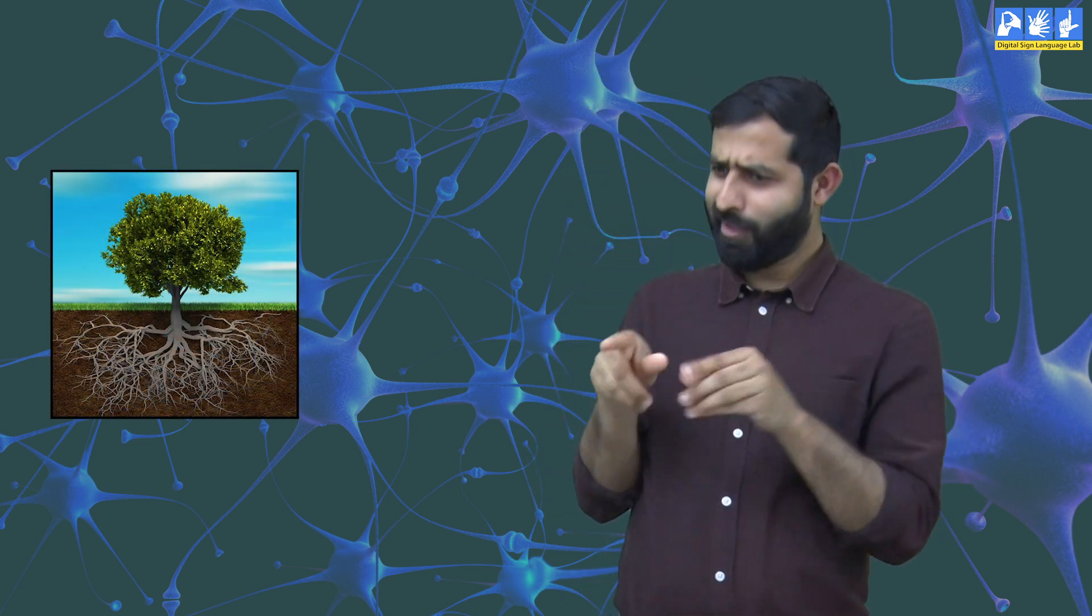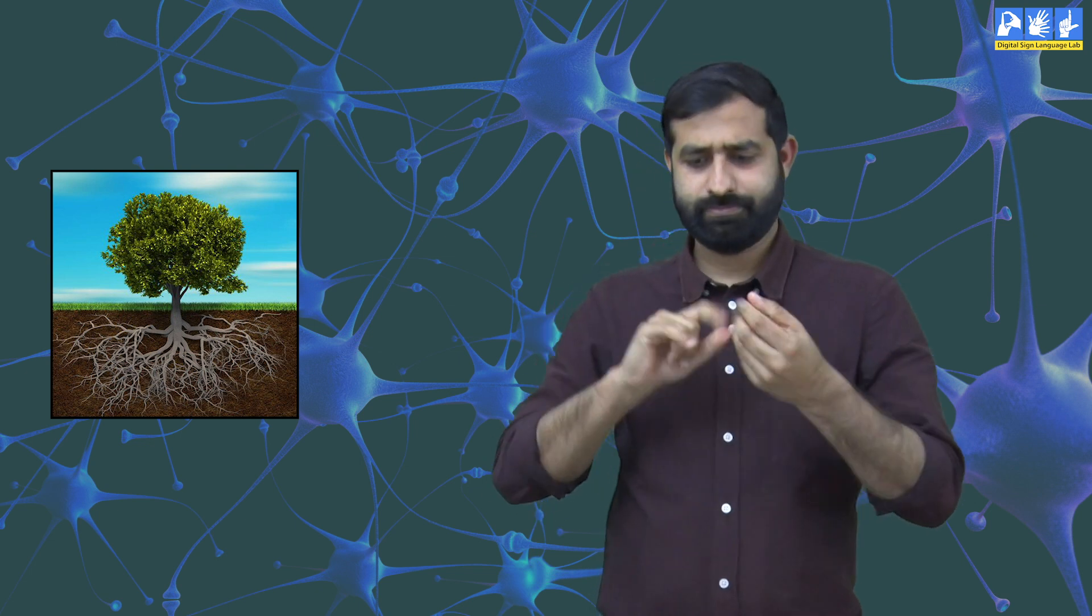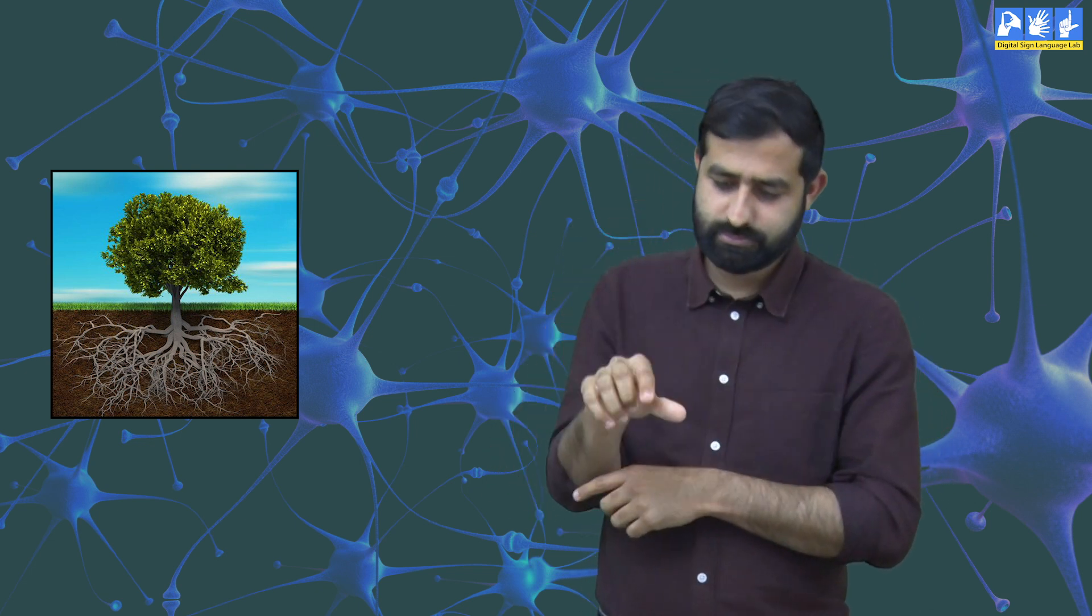When a plant grows, it moves upwards and downwards. A seed when planted in the soil will germinate and the plant will grow in a vertical direction coming out of the soil and the roots will grow deeper into the soil.